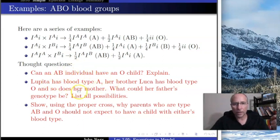Consider this. Lupita has blood type A, but her brother Luca has blood type O, and so does her mother. What does that tell us, if anything, about her father? What genotype could he be?